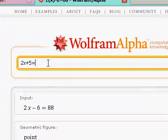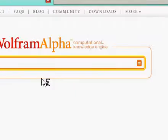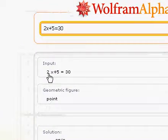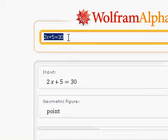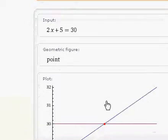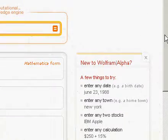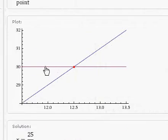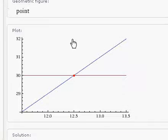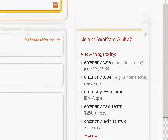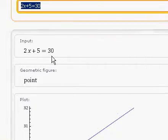2x plus 5 equals 30, and we're going to plot it. There's the equation itself, and if we go down a little bit, we'll see that it... Well, let's see, 2x plus 5 equals 30.